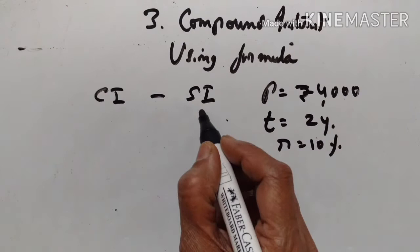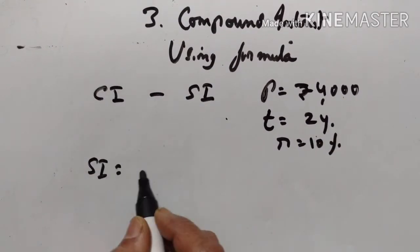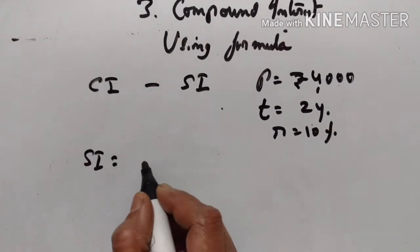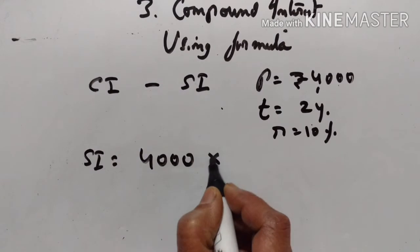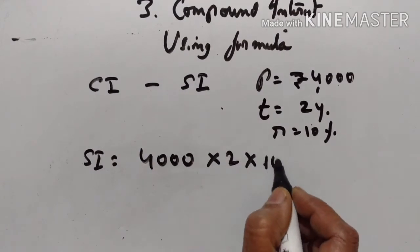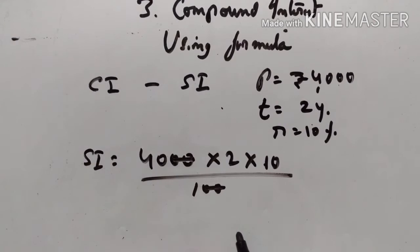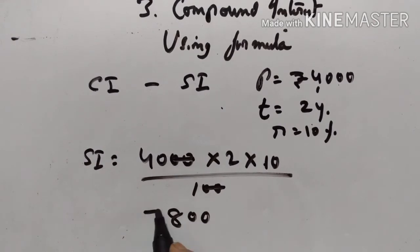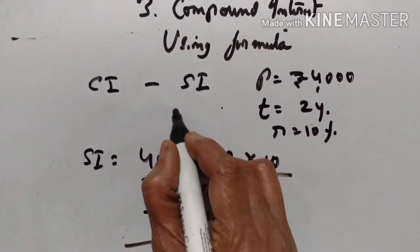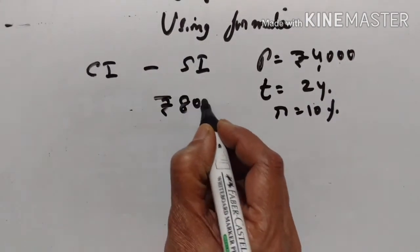Let us find simple interest first. Simple interest is equal to PTR upon 100. That gives us rupees 800. So, simple interest is equal to rupees 800.